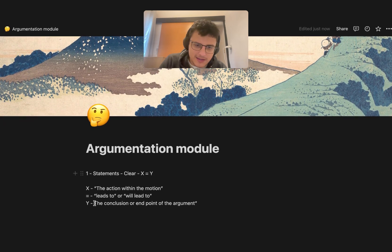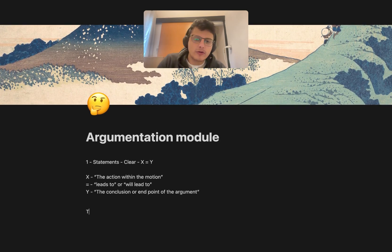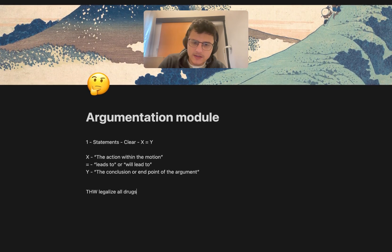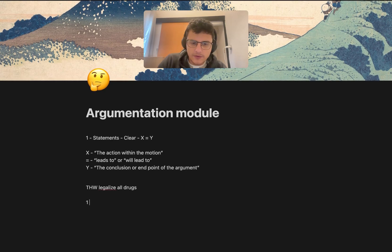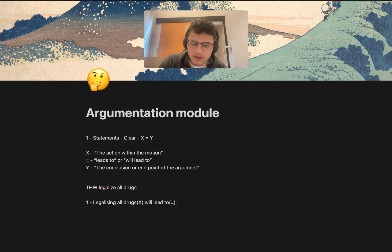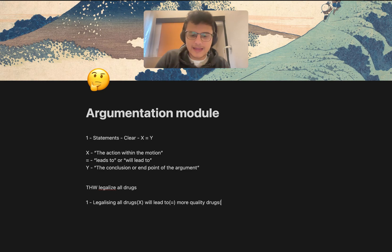This all doesn't make sense yet, so let me give you some examples to clear it up. Let's look at the most generic possible motion: 'This house would legalize all drugs.' Let's generate a few statements. The first basic statement would be: legalizing all drugs — this is the action within the motion, the x part — will lead to — this is the equals part — more quality drugs on the government. That's the y, that's the end point of the argument, where we want to reach.